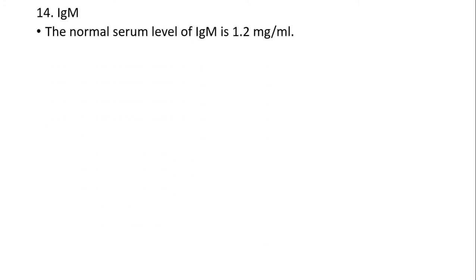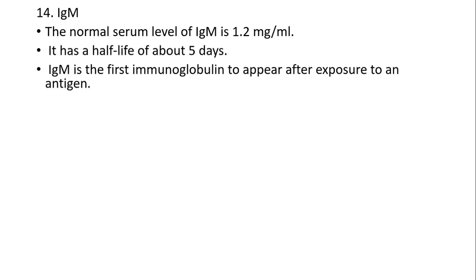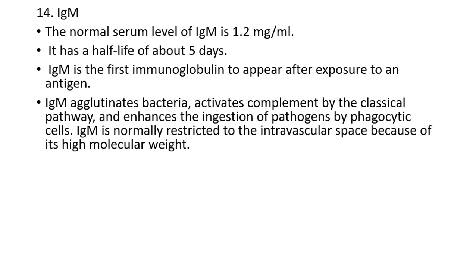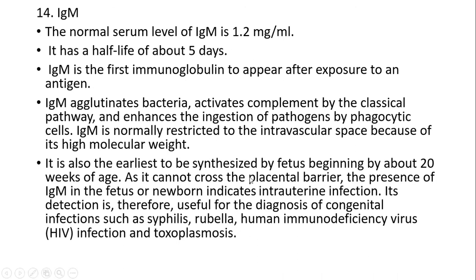IgM: the normal serum level of IgM is 1.3 mg/mL, with a half-life of about 5 days. IgM is the first immunoglobulin to appear after exposure to antigen. IgM agglutinates bacteria, activates complement by the classical pathway, and enhances the ingestion of pathogens by phagocytic cells. IgM is normally restricted to the intravascular space due to its high molecular weight. IgM is also the earliest immunoglobulin synthesized by the fetus, beginning at about 20 weeks of age. As it cannot cross the placental barrier, the presence of IgM in the fetus or newborn indicates intrauterine infection — useful in diagnosis of congenital infections like syphilis, rubella, HIV, and toxoplasmosis.